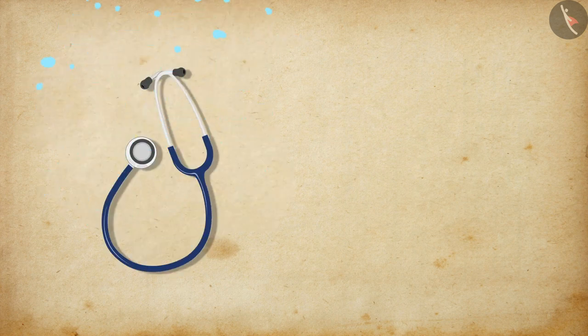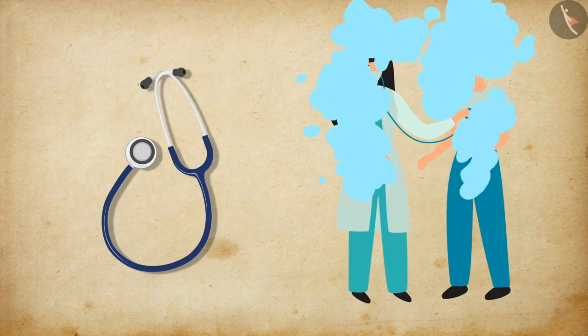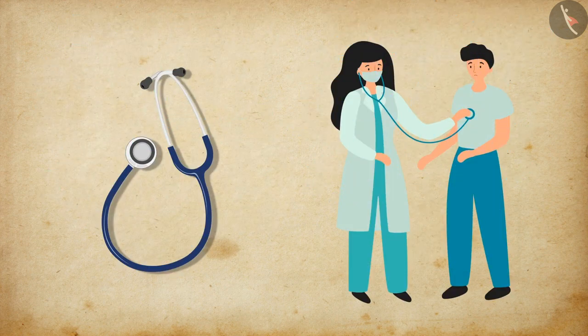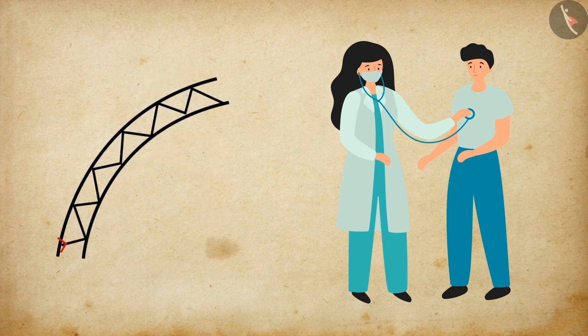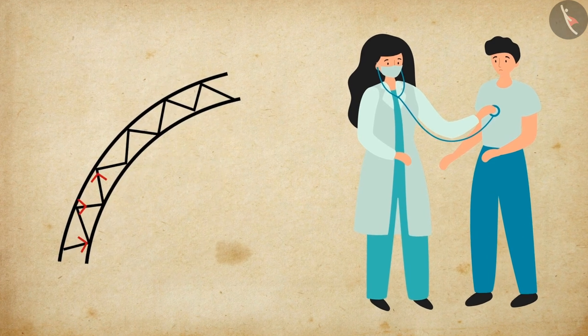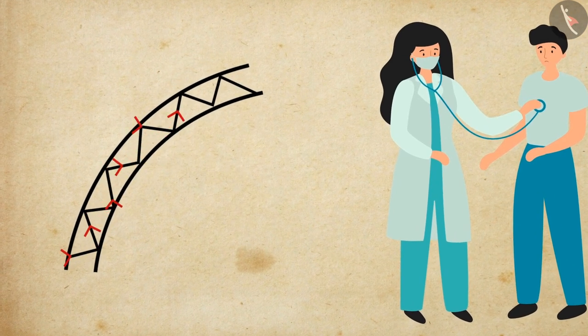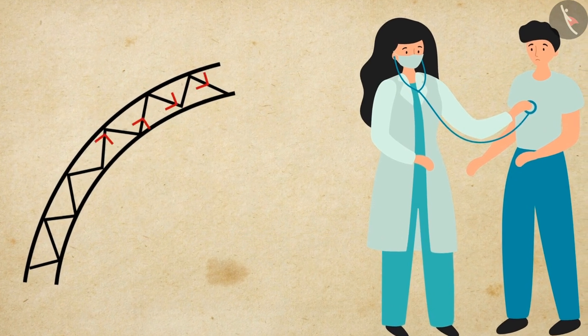The stethoscope, which is used by doctors to listen to the sounds of the heart and the lungs in the human body, is another example of multiple reflections. Here, the sound reaches the doctor's ear after going through multiple reflections.